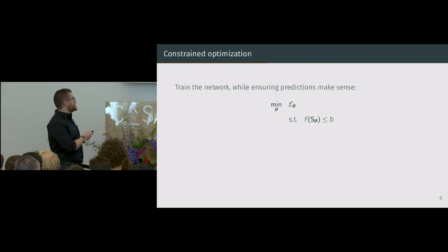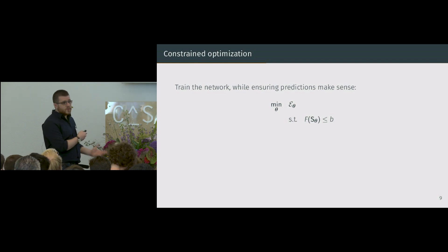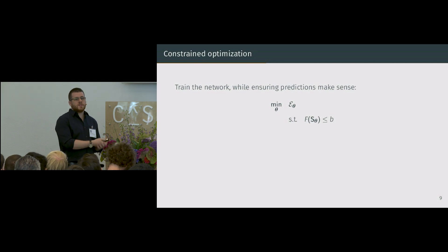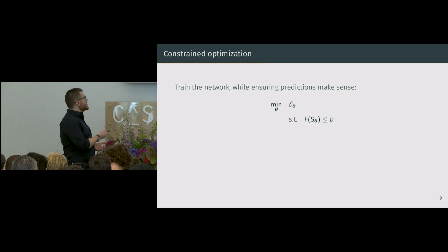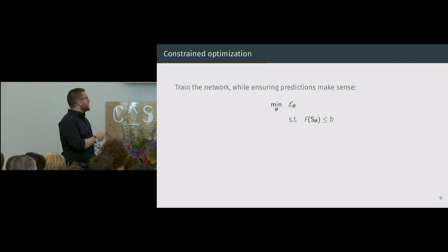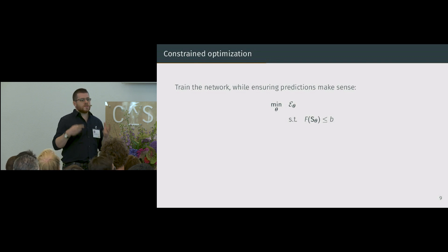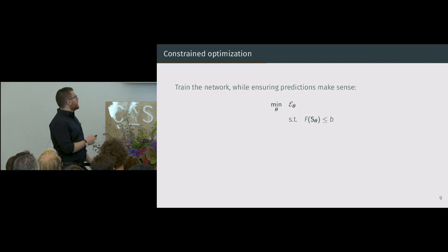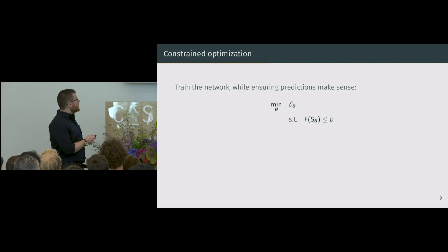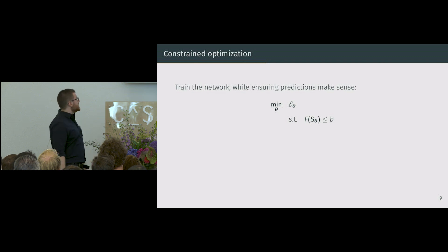The predictions are S(theta), and F is any function that will compute something like the size, the length, the compactness of the segmentation, or the location of the centroid. You have an inequality constraint to limit what it's supposed to do. Of course, you can have as many constraints as you want, but we'll keep only one in this example to keep it simple.